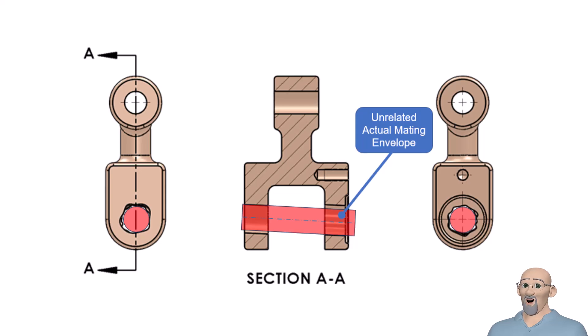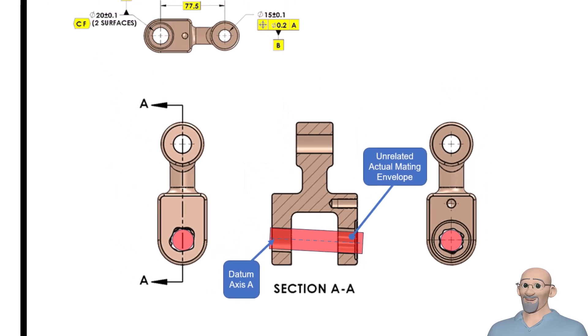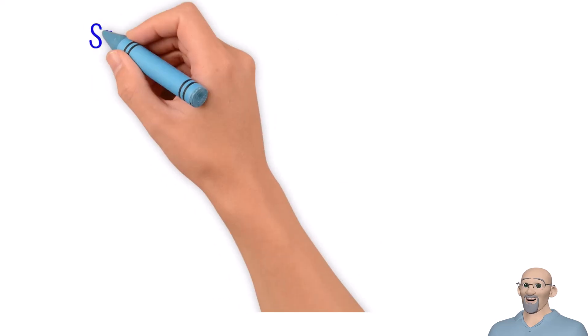In our example, datum feature A is imperfect. You can see from this first tip several examples of how the standard now supports using patterns to establish a datum feature.